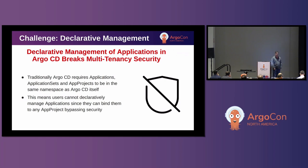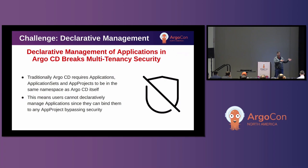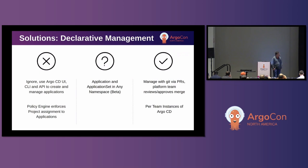Another challenge is declarative management of applications and application sets in Argo CD when doing multi-tenancy. A big issue is that in traditional Argo, where applications, app projects, and application sets all live in the Argo CD installation namespace, you cannot allow users to manage that YAML directly — either directly on cluster or through Git. Because as soon as you do, they can bind that application to any app project and inherit whatever security is in that project. As a GitOps practitioner, creating things imperatively through the UI or CLI has a bad smell. We should be doing applications and application sets declaratively.